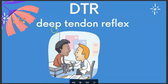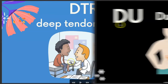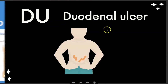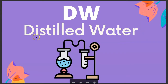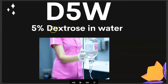DTR is deep tendon reflex. DU is duodenal ulcer. DVT — this is a big one you should know — is deep vein thrombosis. What occurs is that a clot basically starts to form, and the danger is if the clot dislodges. DW is distilled water, and D5W is 5% dextrose in water.